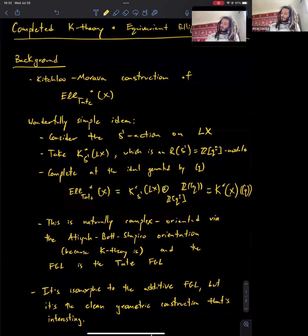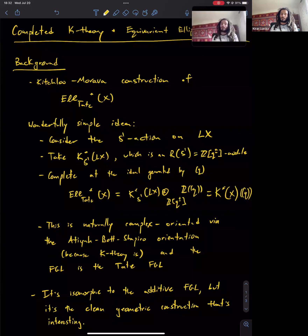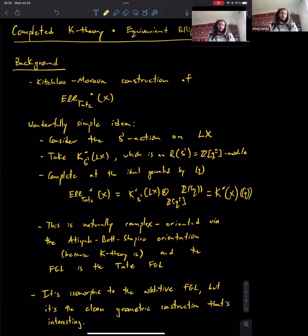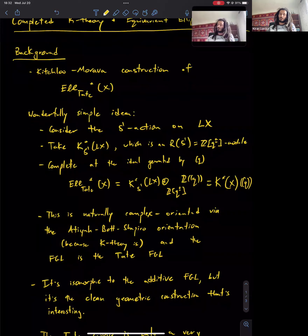It's geometric because K-theory itself is geometric—it has to do with vector bundles. So you're dealing with something like Laurent series of vector bundles. Over this ring, the Tate curve's formal group law is isomorphic to the multiplicative one. So from the point of view of chromatic homotopy theory, you haven't done anything super interesting, because the multiplicative formal group law is easy enough to understand. But the point is you've given a geometric construction of it, and that's the nice part.